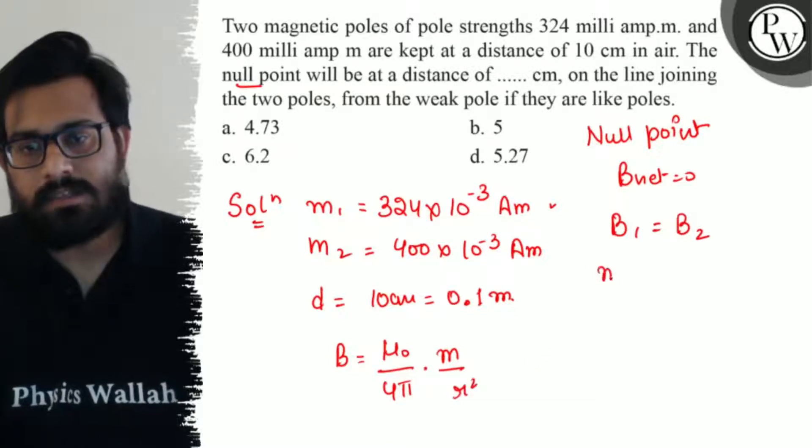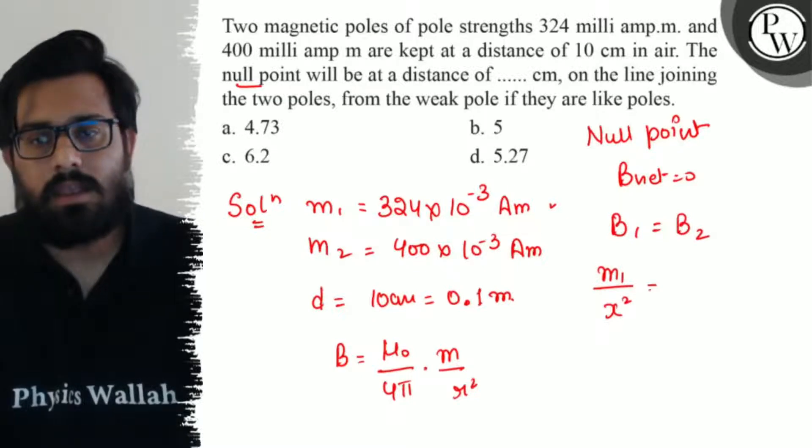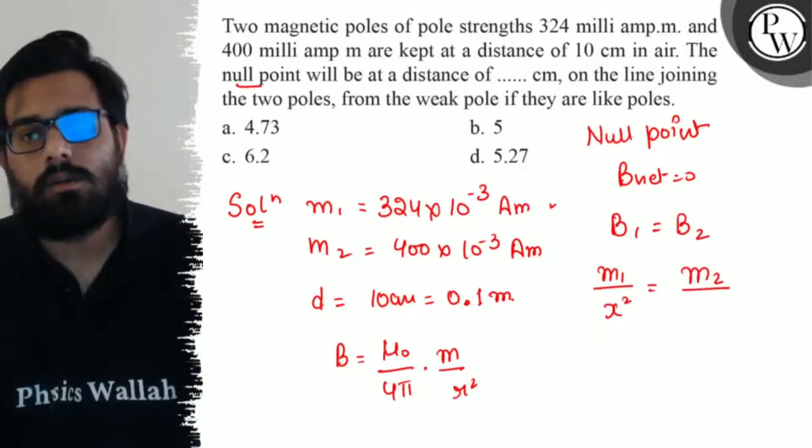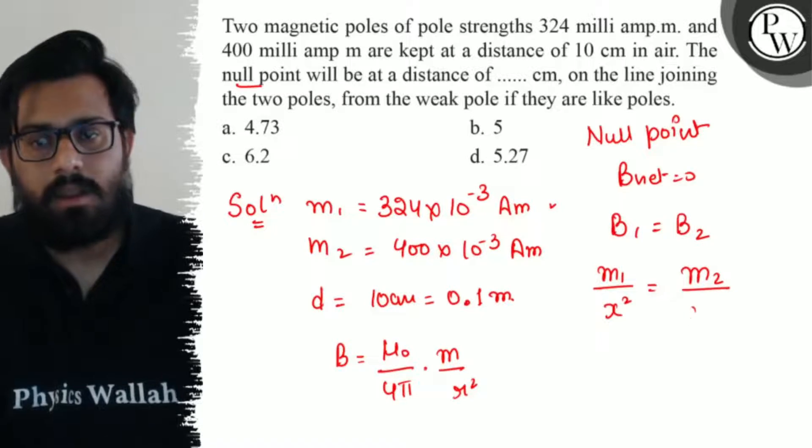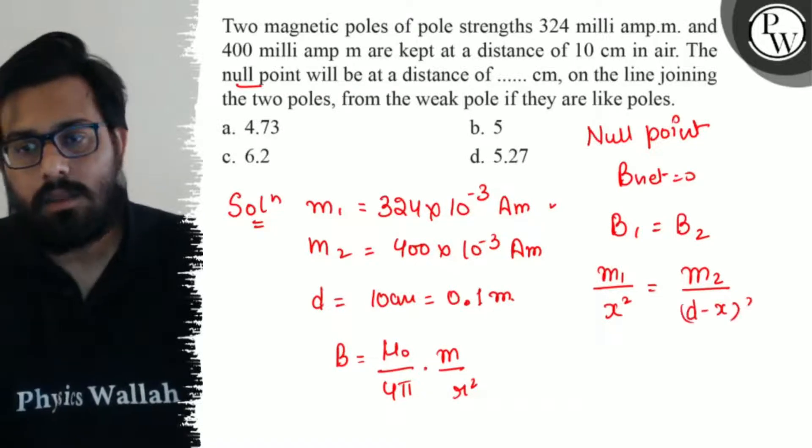So here this can be written as m1 upon x square is equals to m2 upon the remaining distance, d minus x, whole square.